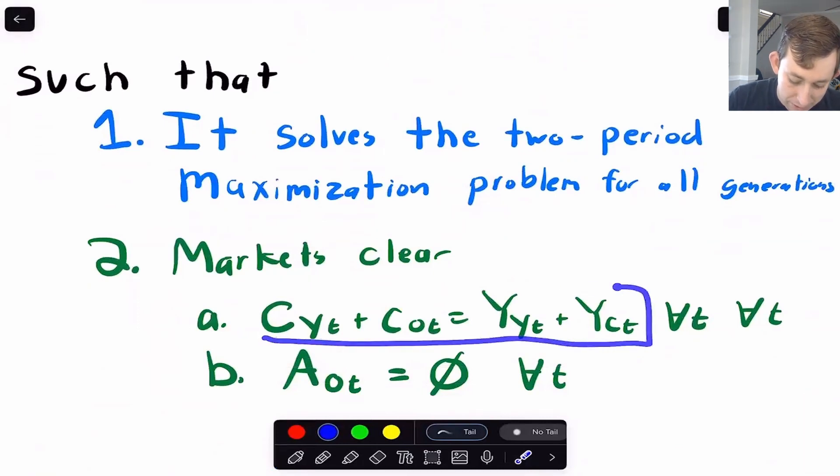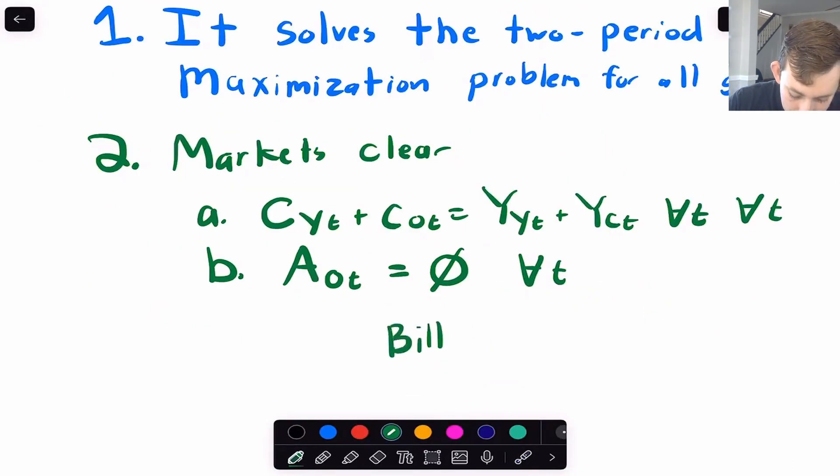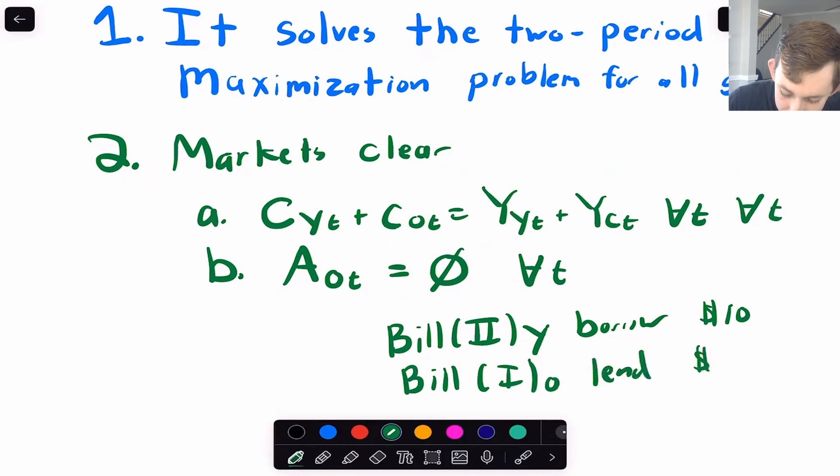And it also has to satisfy market clearing. So this is the market clearing condition that we've talked about before with Bill. This condition right here, for example, maybe it's the case that Bill, the second, when he's young, he's going to borrow $10. Let's suppose that he borrows $10. Well, he can't borrow $10 from thin air. So what has to be the case is that means that Bill, the first, when he's old has to lend $10 because now the total assets are zero because these $10 cancel each other out. And so what that means is the assets for retirement overall have to be zero because we have to balance. Everyone who's borrowing has to find someone to lend them the money. They can't just borrow from thin air and they can't just lend money to no one. They have to lend money to someone and they have to borrow from someone. And that's all that this condition means.